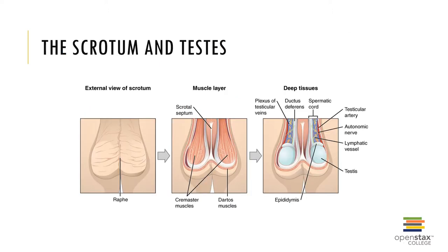The scrotum and testes are shown here. The scrotum is a pouch of skin containing the testes, or gonad of the male, divided into two scrotal cavities by a scrotal septum marked externally by a raised ridge called the raphe. This allows the testicles to descend outside the body cavity where they can remain cooler and proper sperm production can occur. Proper sperm production occurs at three degrees lower than body temperature.